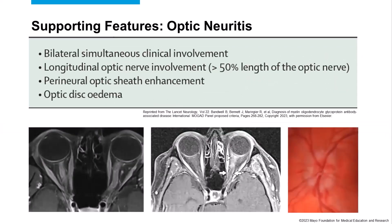What about the supporting features if the patient has optic neuritis as their core clinical event? If it's bilateral — we can see an example of bilateral optic nerve enhancement and bilateral optic neuritis — that's very suggestive of MOGAD. If you have a long lesion, greater than 50% of the length of the optic nerve, that's quite suggestive. If you have involvement of the optic nerve sheath, that can count as a supporting feature. Or if you have prominent optic disc edema — very common in about 85% of MOGAD patients with a lot of swelling of the optic disc — any of these features can count as a supporting feature if your antibody is low positive, or you don't have a titer, or you only have it positive in the CSF.